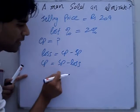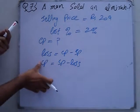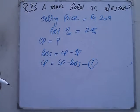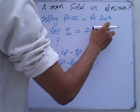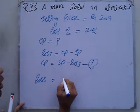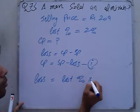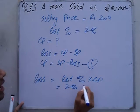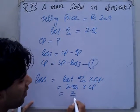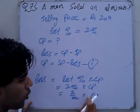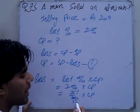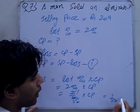If you have to write it, then cost price is equal to selling price — this is formula number 1. Selling price is 209. Loss percentage is 2%, so loss equals 2 over 100 into cost price, which simplifies to 1 over 50 into cost price.